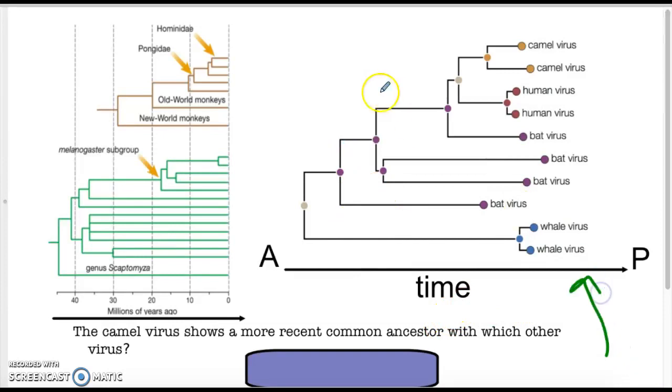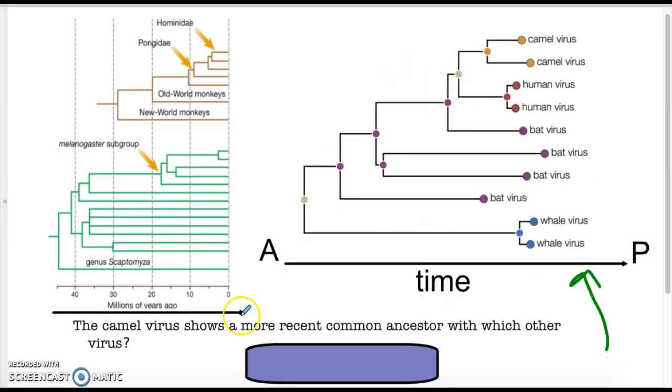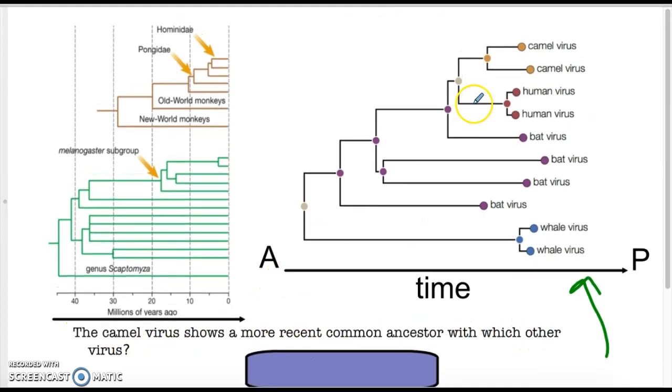On the bottom of page 26, it has you analyzing a virus phenotype. It says the camel virus shows more recent common ancestor to which other virus. Here is the camel virus, and we are trying to see which common most recent, because you have one here, and here, and here, and here. If you look at time, ancient to present, you would want to be closer to the present-recent site. So that would be this one right here. Your answer would be human virus.